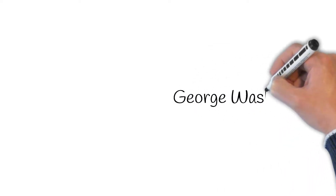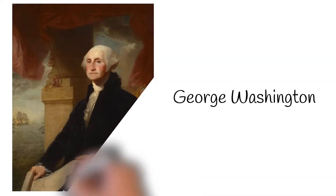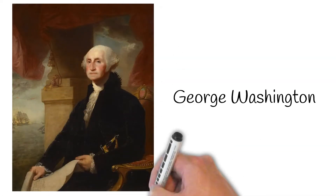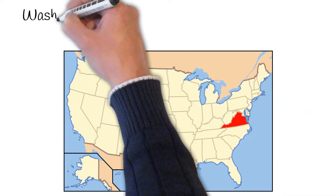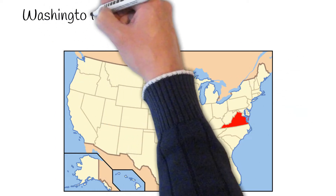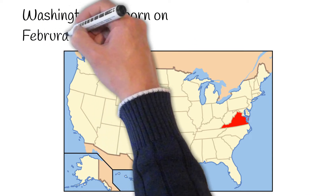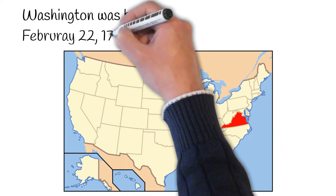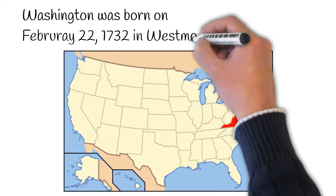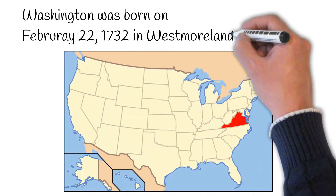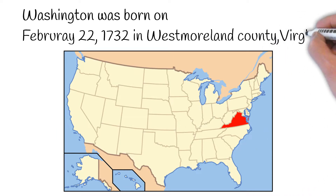Hey there, today let's learn about George Washington. George Washington was born on February 22, 1732, in Westmoreland County, Virginia.